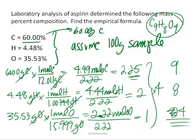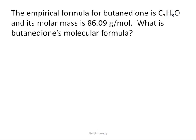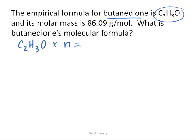If we want to go to the molecular formula — the absolute ratio of atoms within a molecule — we need one additional piece of information: the molar mass, which we can determine using mass spectrometry. So if we determined the empirical formula through gravimetric methods to be C2H3O for butanedione, we want to find the molecular formula by multiplying that lowest whole number ratio by some integer N.